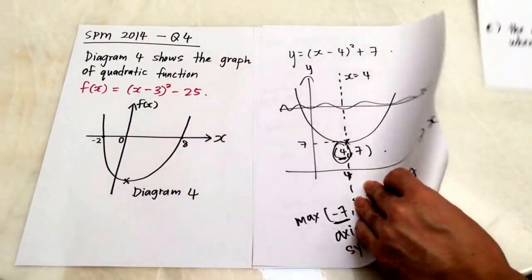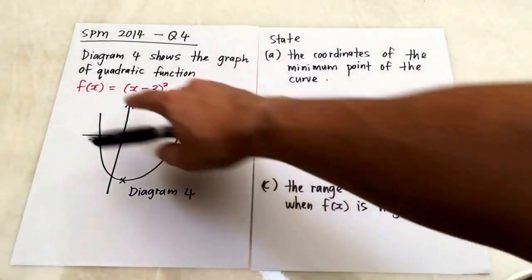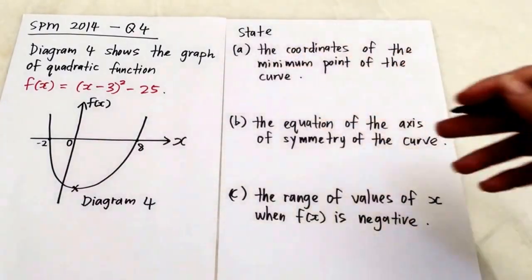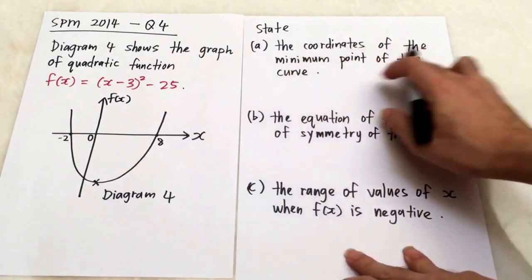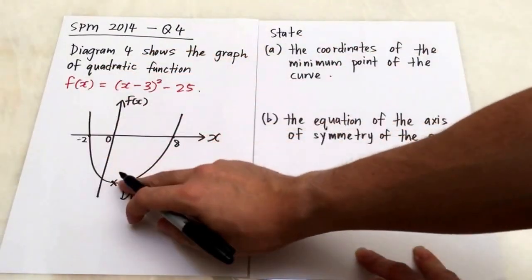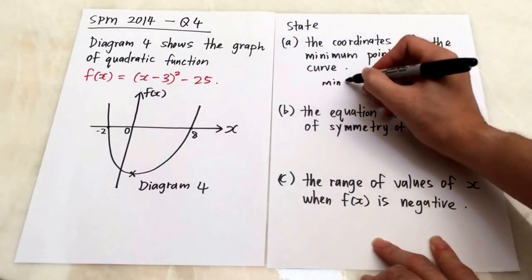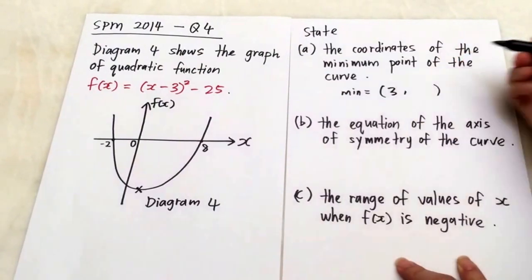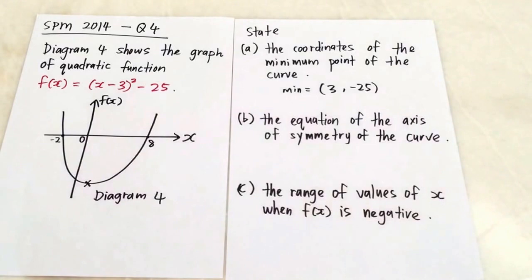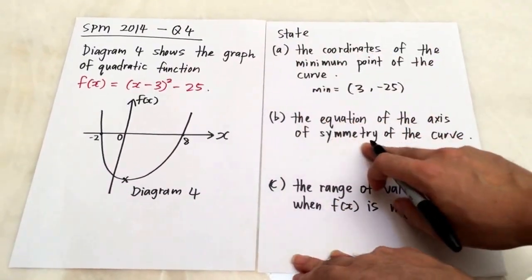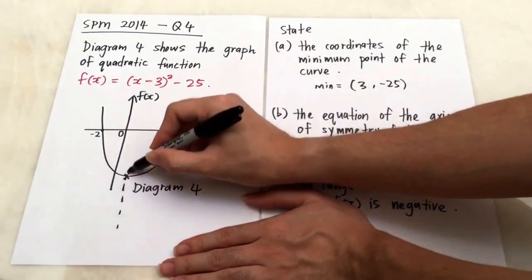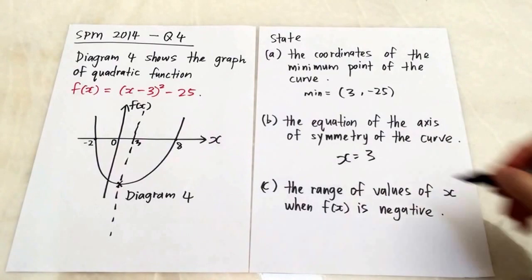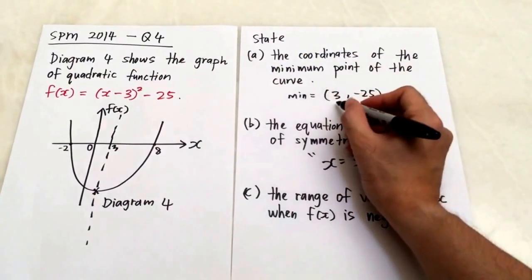Now going into the question. The word 'state' means you can write the answer directly without working. Part A: state the coordinate of the minimum point. Since we have x minus 3, the x-coordinate is positive 3 (opposite sign). The y-coordinate is the last value, negative 25. So the minimum point is (3, negative 25). Part B: state the equation of the axis of symmetry. Since the x-value of the minimum point is 3, the axis of symmetry is x equals 3.